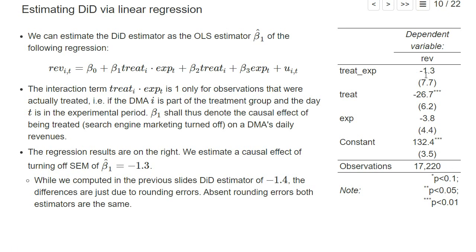Here we see the regression results. We find an estimator beta-one-hat of minus 1.3, which estimates the causal effect of our treatment — turning search engine marketing off. In our previous slide we computed a difference-in-differences estimate of minus 1.4, but if we had not made rounding errors, one can show these estimates would be exactly the same. The coefficient on the interaction term in the linear regression is actually the same as the manually computed difference-in-differences estimator.